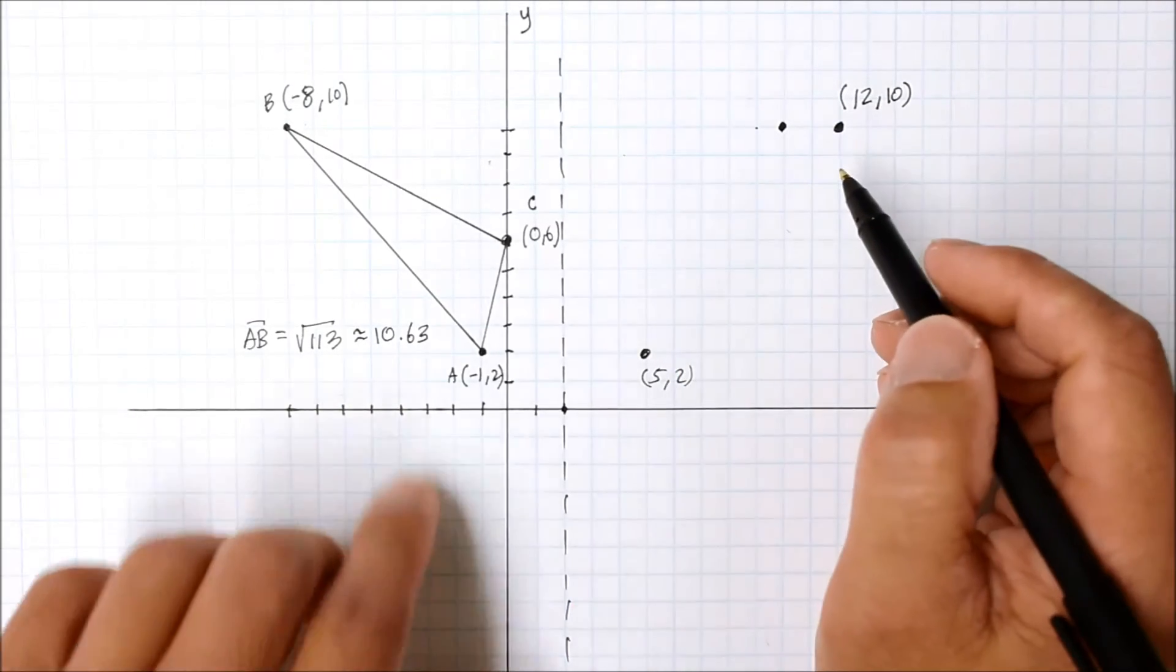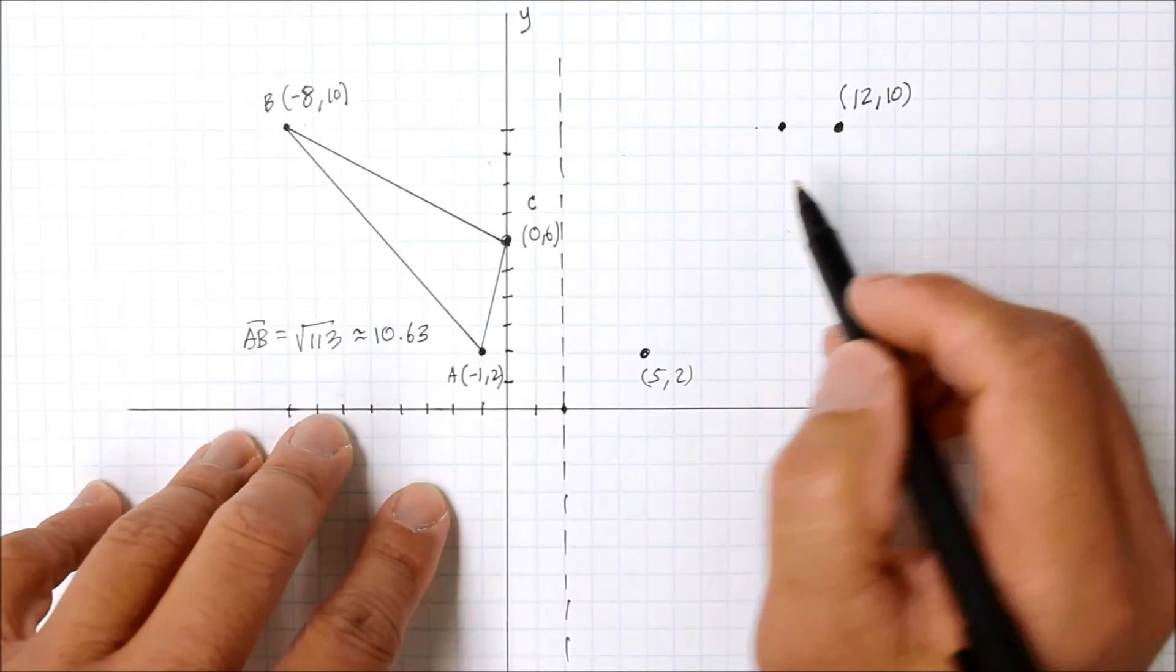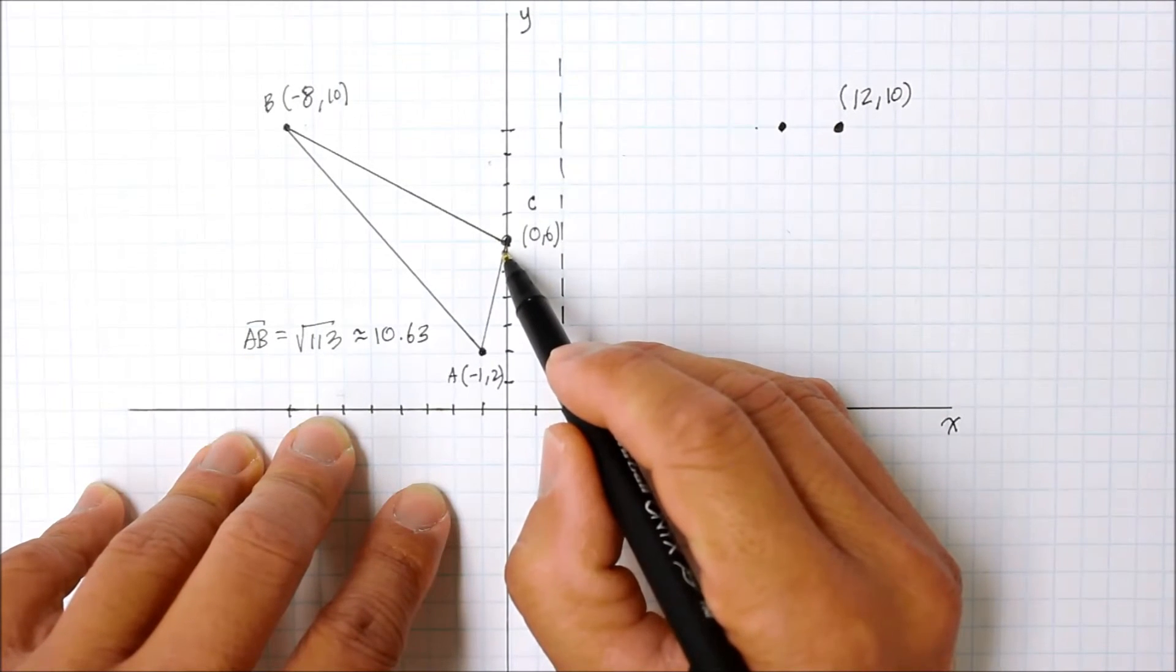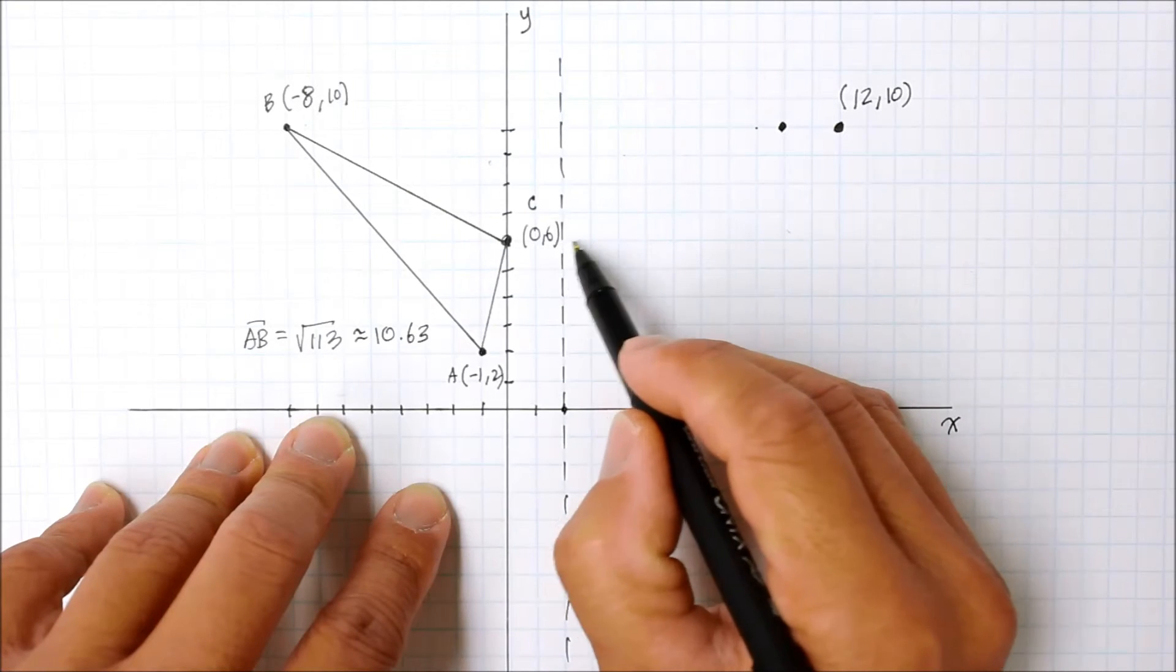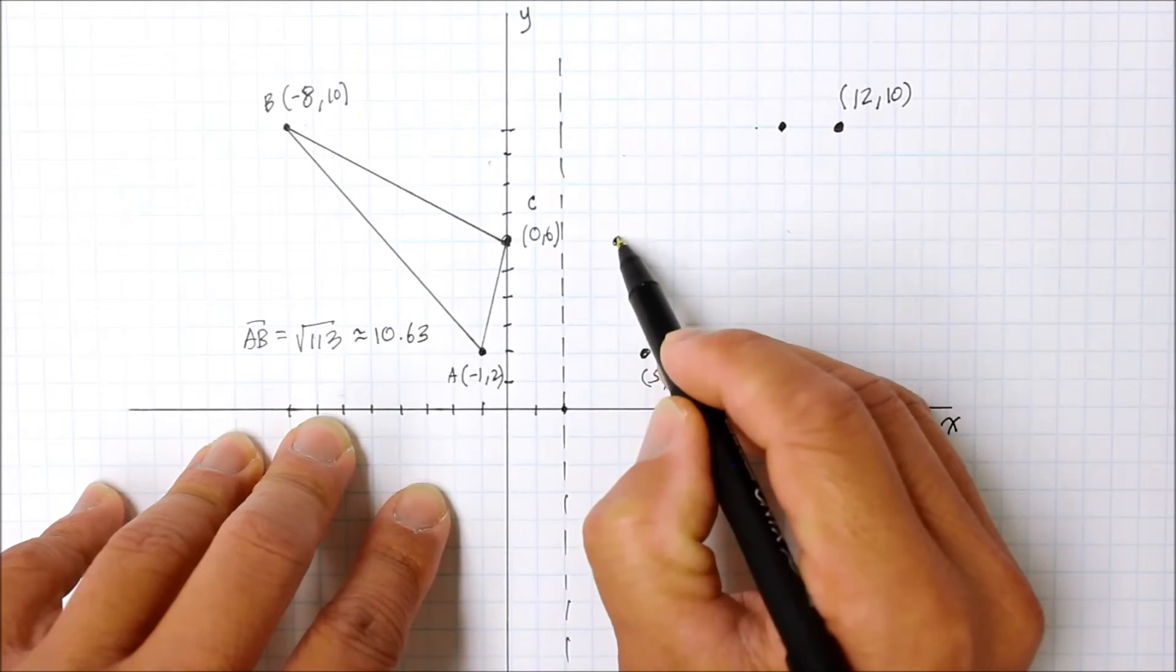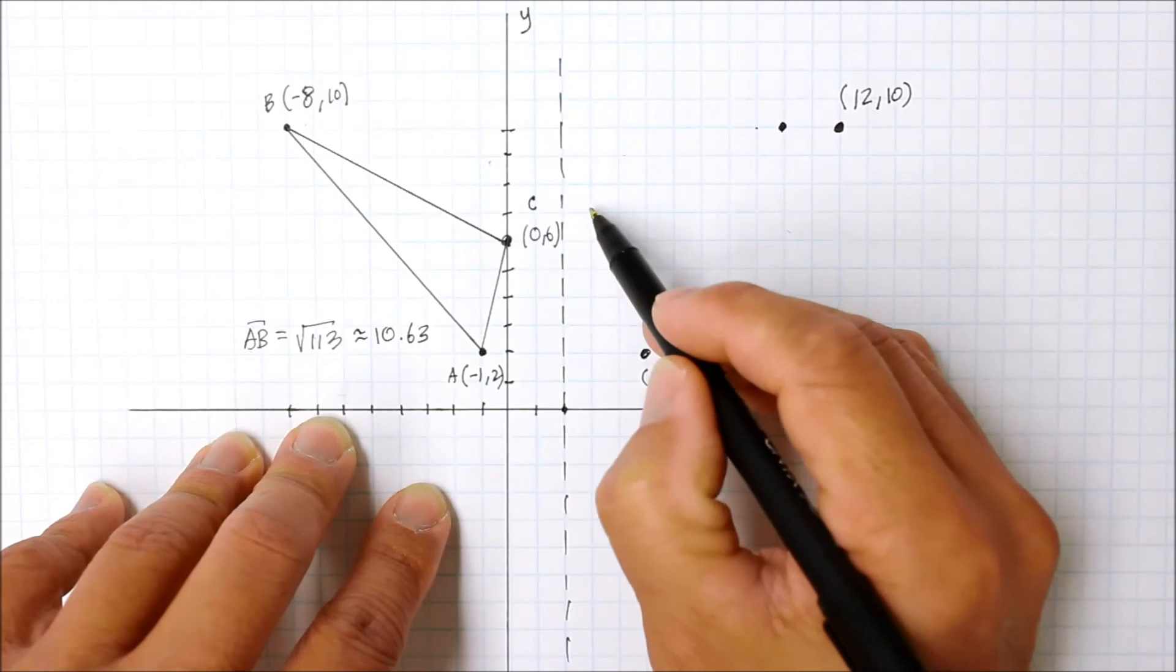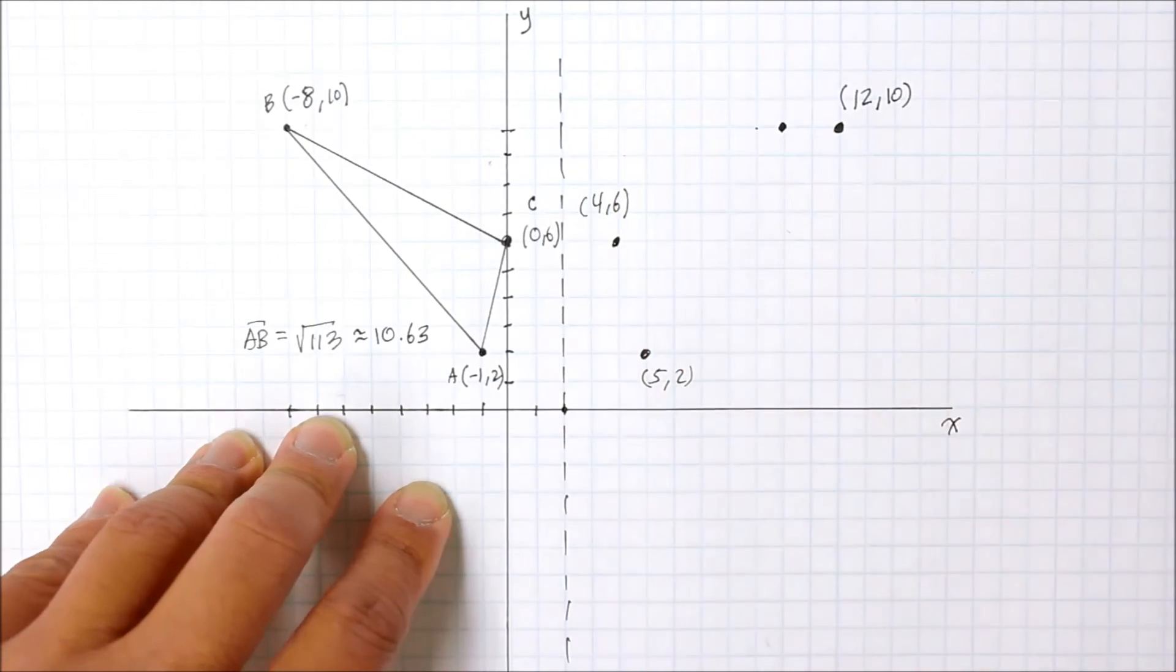Then, point C was 0, 6 and that was 1, 2 units away from the line of reflection. So we're going to go 1, 2 units away to the right. That becomes 1, 2, 3, 4, and 6, which does not change.